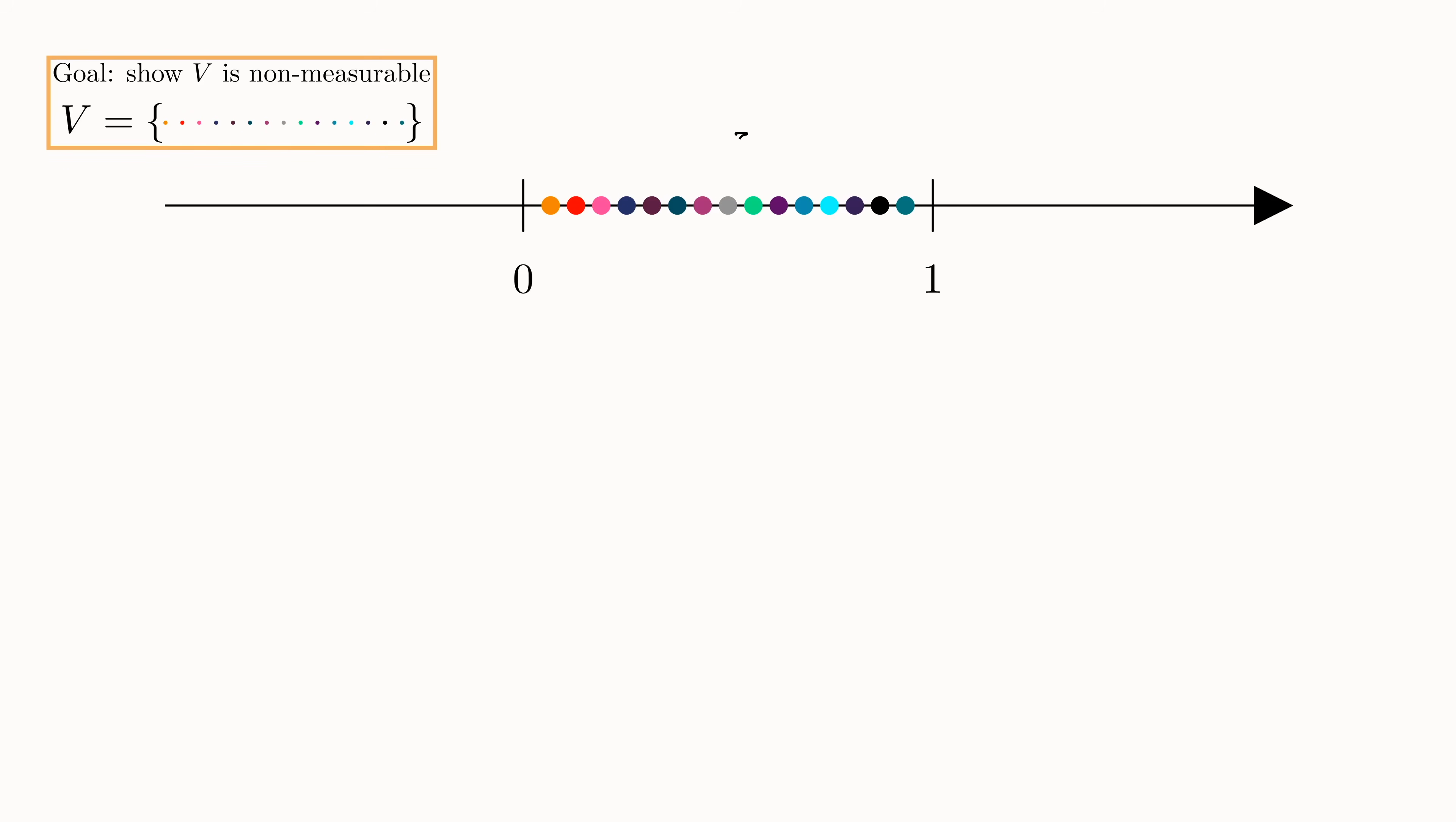We represent V as these dots on the unit interval. We then consider translated copies of V. To do this, we will take a rational number, say 3 fourths, and add it to V. This results in the entire set V being shifted by 3 fourths to the right. If we shift by minus 2 fifths, we get something like this.